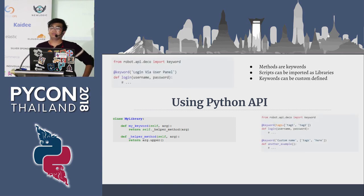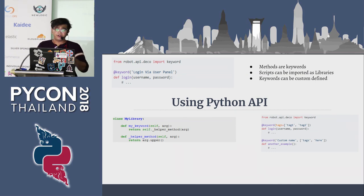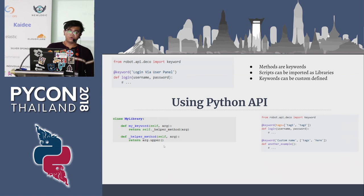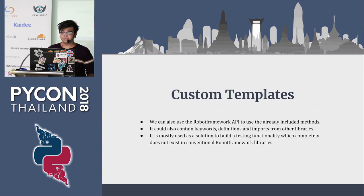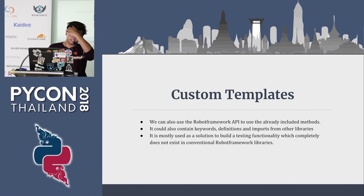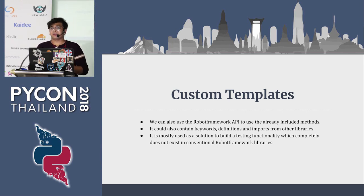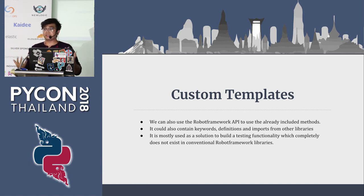If you like to do things your own way, methods are keywords. You can import the Robot Framework API, define your own keywords using the syntax, and create functions for what you want to do when the keywords are called. You can also define tags. If you want to write something that calculates stuff and returns a value using your own script and keywords rather than Robot Framework's built-in library, you can do it — there are a lot of APIs for that.